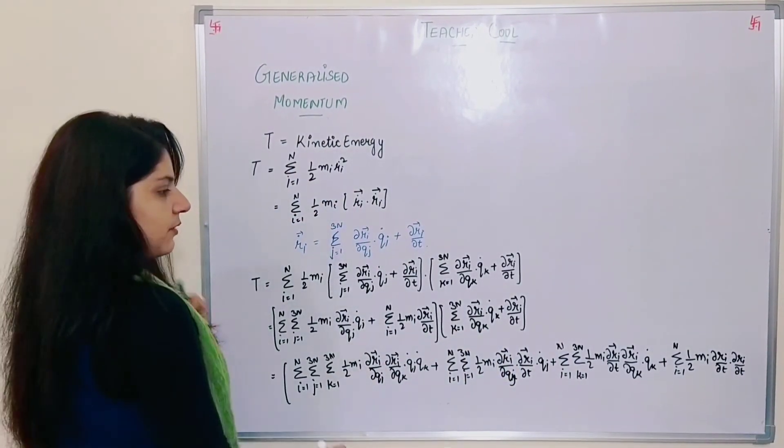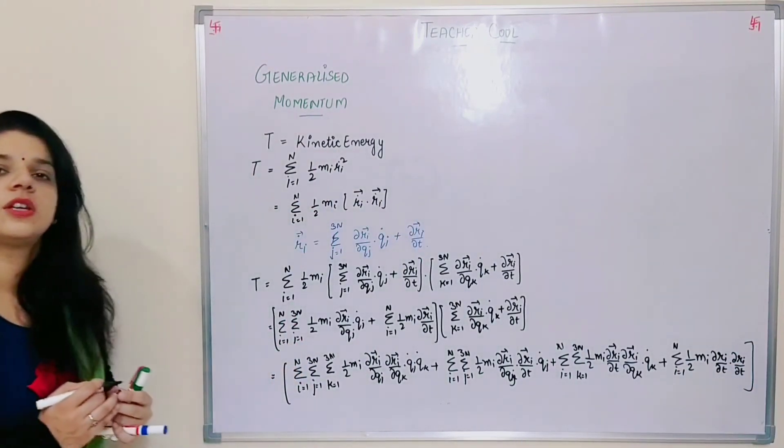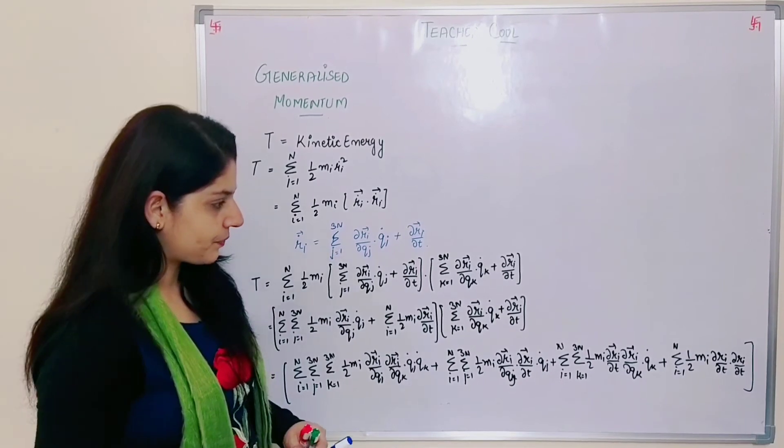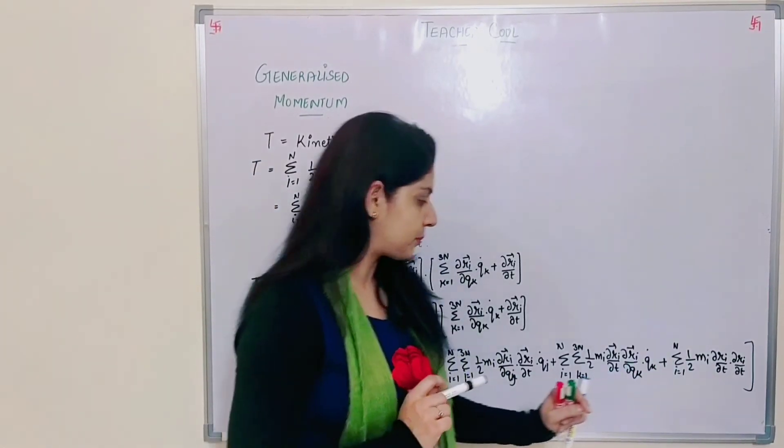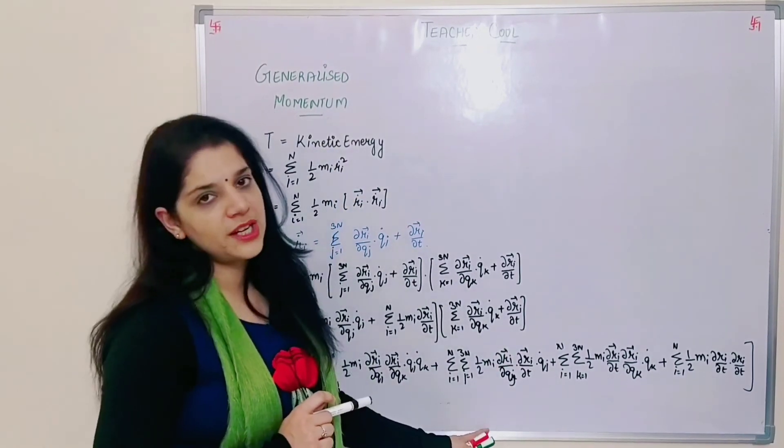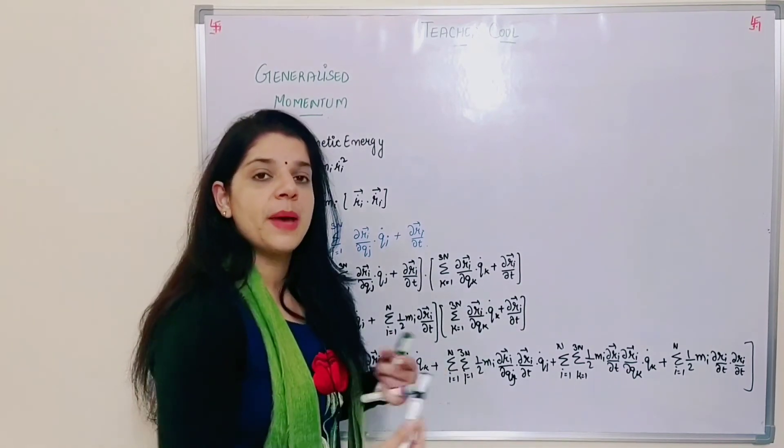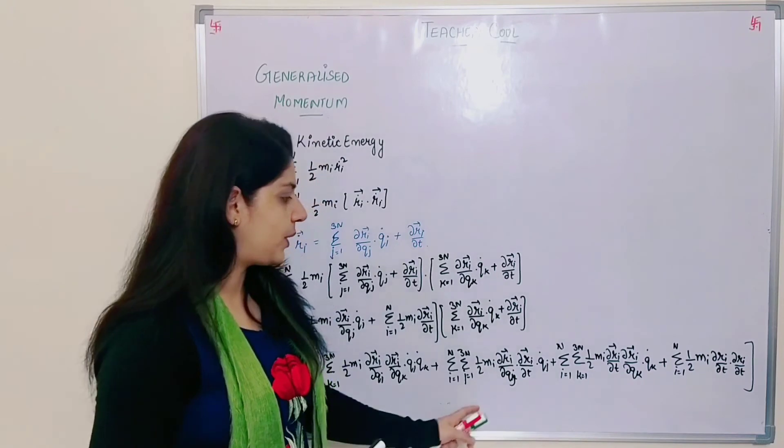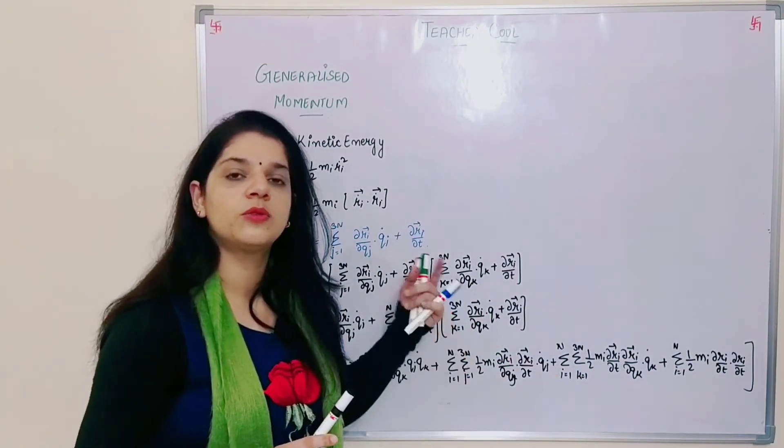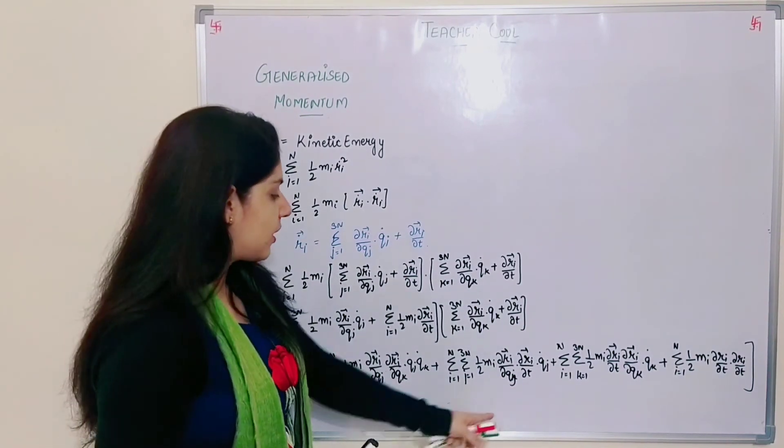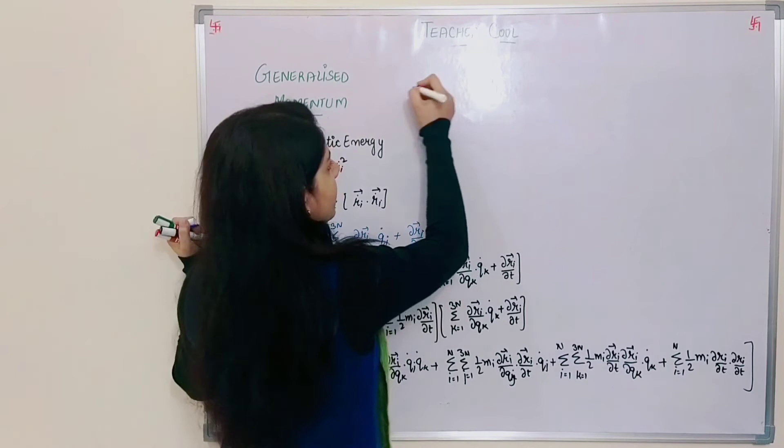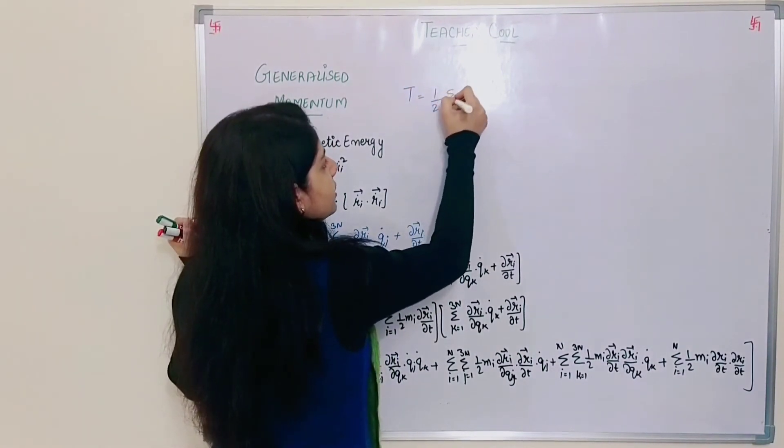This is my final equation for kinetic energy. If we observe carefully, this is del r_i by del t whole square. In these two terms, one has i and j summation, the other has i and k summation. The rest of the terms are almost equivalent, only the notation is different. If we balance the notation, the equations become the same. Two times half gives one, so one term remains.